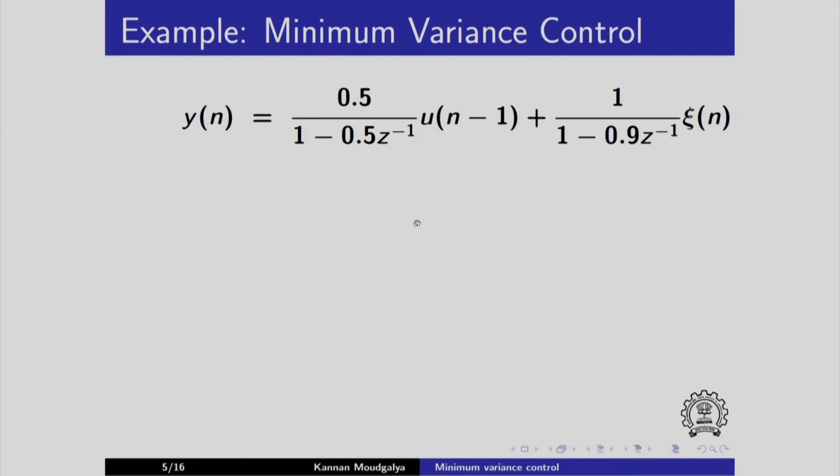Here is an example of minimum variance control. We have this numerical example. Here k is 1. There is a delay of just 1 sample.